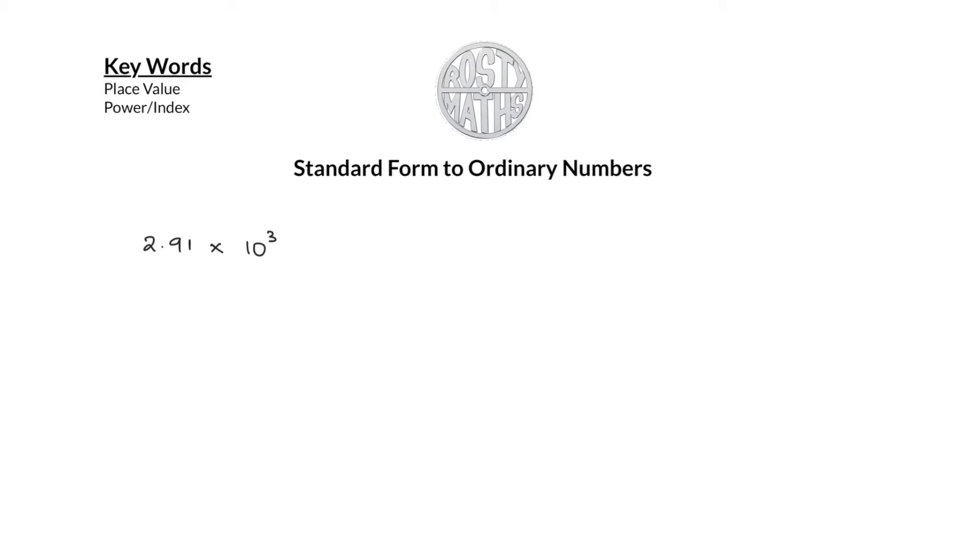So the idea behind this is understanding that 10 to the power 3 actually means 10 times 10 times 10, which is a thousand. So really what we're actually doing is multiplying 2.91 by 1000. Now this number is written in standard form, which shows that this is between 1 and 10. We got times 10 to some power—it is always a 10. Anyway, coming back to the proper maths now.